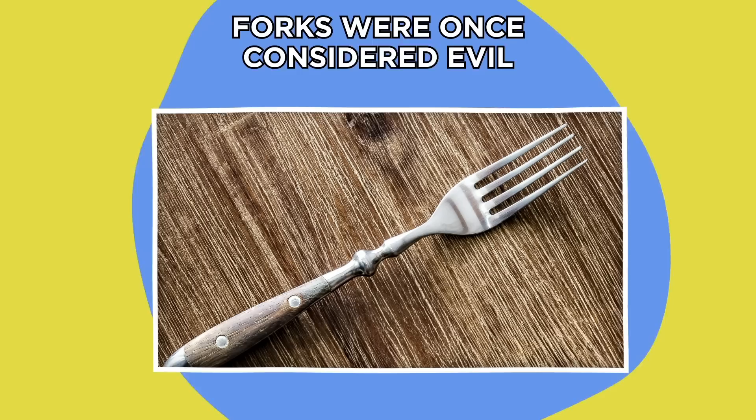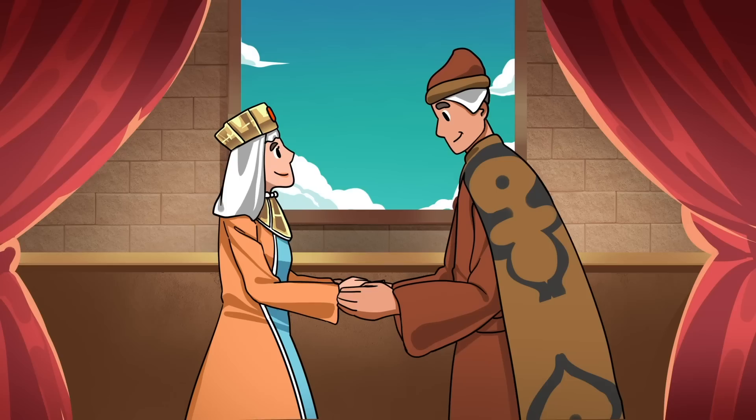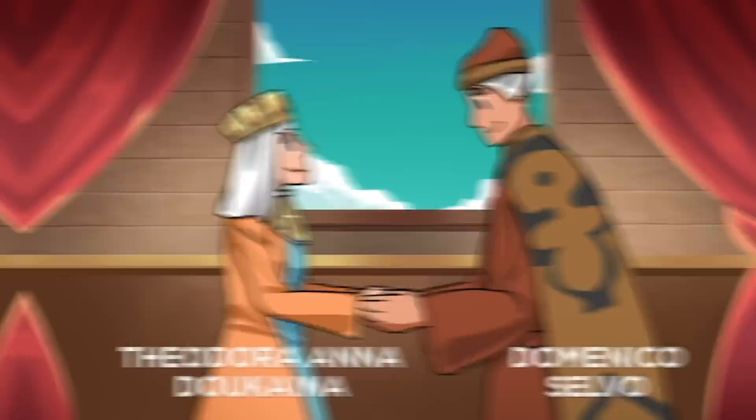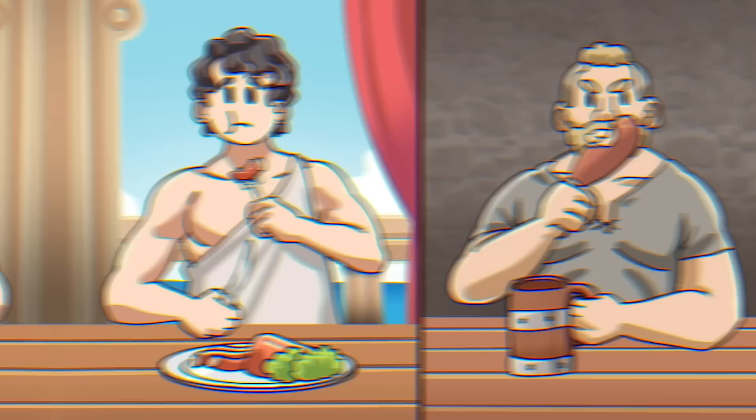Forks were once considered evil. Back in the 11th century, Byzantine-born princess Theodora Anaducena was wed to Domenico Selvo, the Doge of Venice. This dude was basically the duke, so such an arrangement hardly seemed out of the ordinary, until it came to dinner time. Among the few possessions the princess had brought with her to Italy were some gold forks. Although the ancient Greeks used forks to stop food from wriggling about, the tool hadn't yet caught on in Europe, so she was a trendsetter. What's wrong with that?